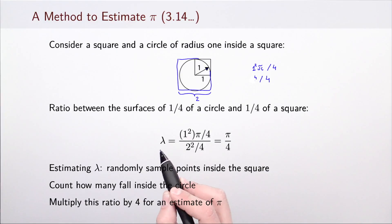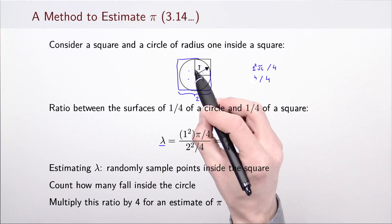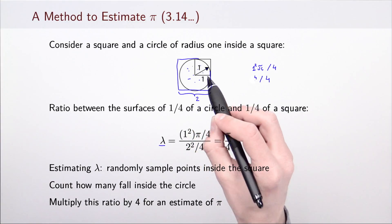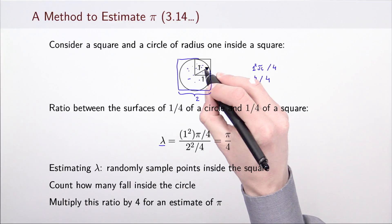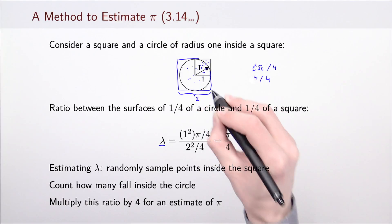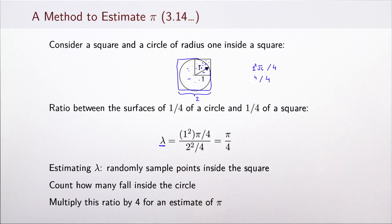Let me denote this value by lambda. Suppose we want to estimate lambda. What we can do is randomly sample points inside the entire square and then see what fraction belongs to the circle. Alternatively, we can randomly sample points inside one quarter of the square and see what fraction falls into that quarter circle. In any case, we obtain an estimate of lambda. So if we want to get an estimate of pi, we just need to multiply that estimate by 4.